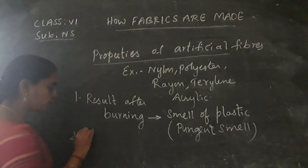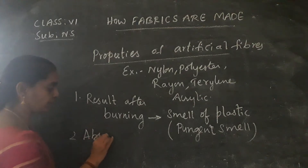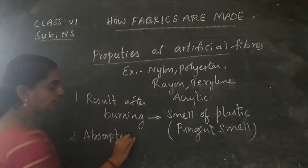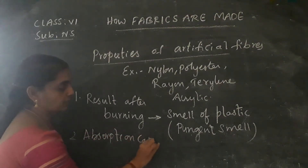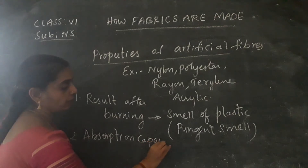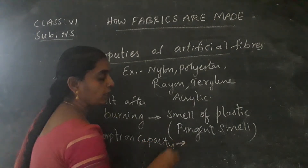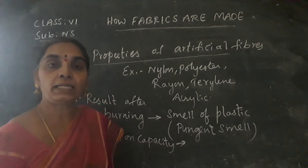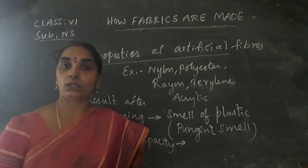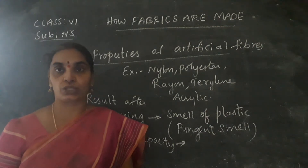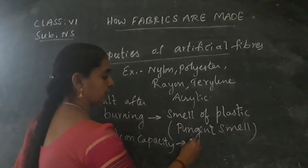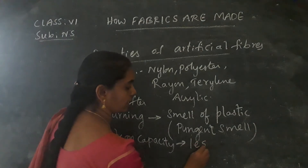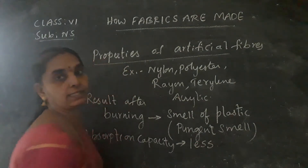If you see the absorption capacity of artificial fibers, it is very less when compared to wool, cotton, and jute. The absorption capacity is very less.